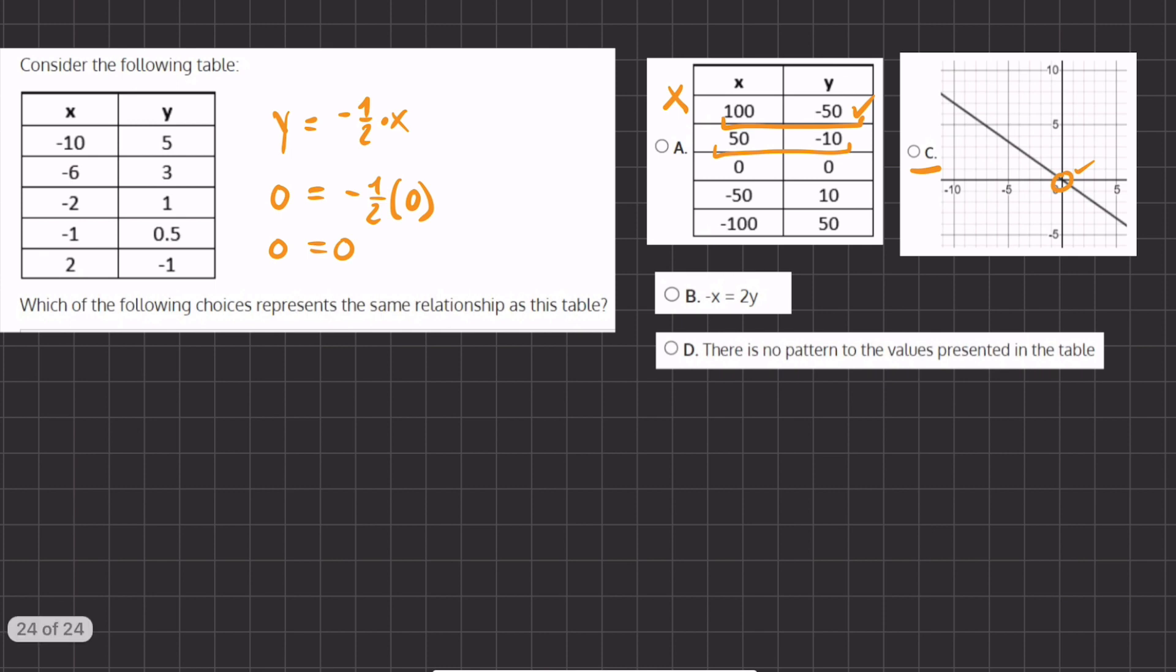Now let's pick another point to make sure. We have negative 5 up around 3 and a half. So let's plug this in. We have y equals 3 and a half, equals negative half times x, which is negative 5. So now we have 3.5 equals negative half of negative 5, which will give us 2.5. And these values do not equal one another, therefore C is also incorrect.